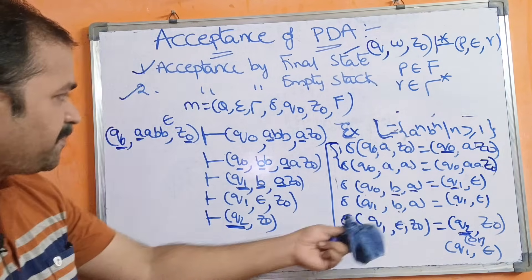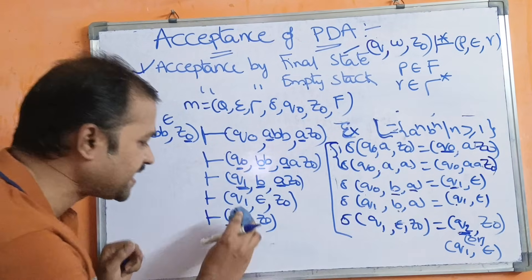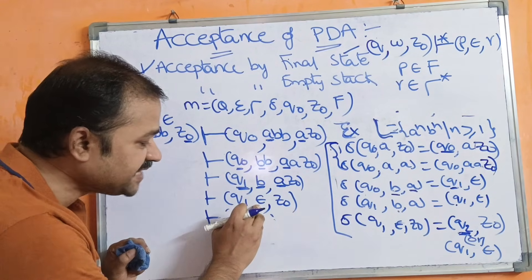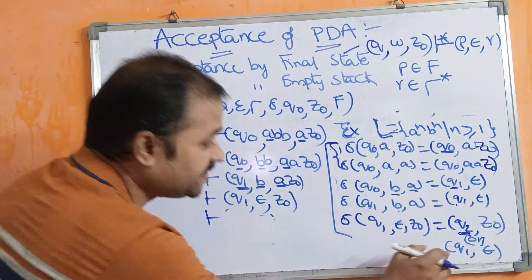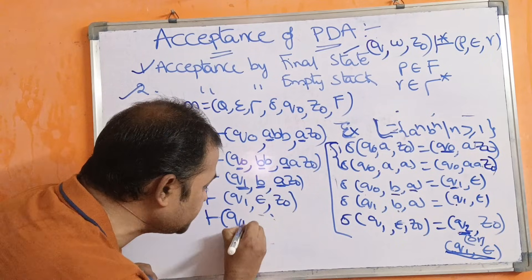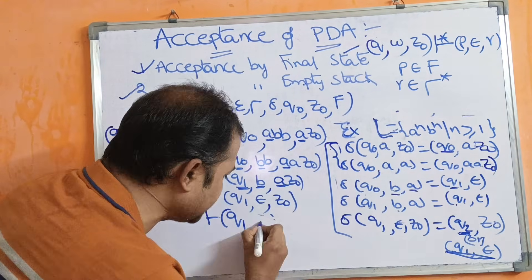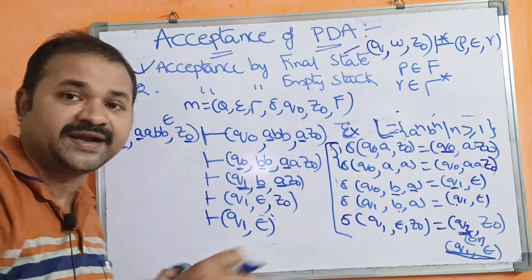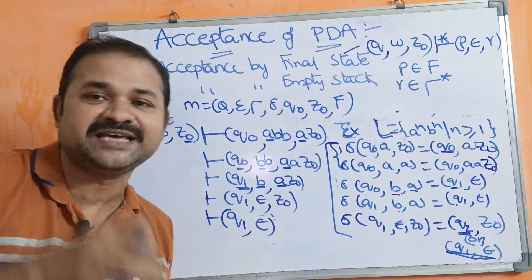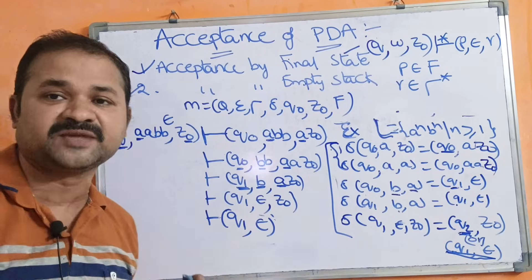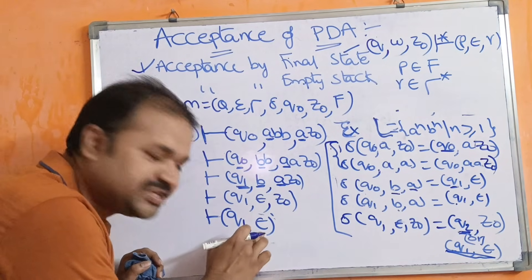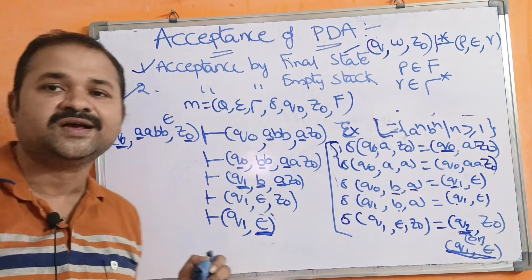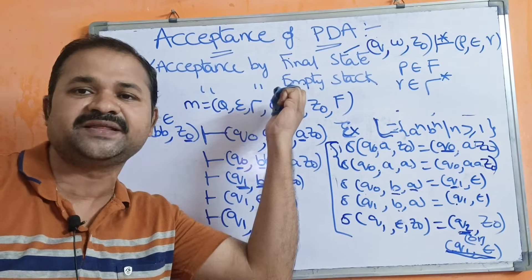Now let us see the second approach: acceptance by empty stack. We need to change only one move. If the current state is q₁, the input symbol is epsilon, and the stack's topmost symbol is Z₀, then we stay at q₁ but perform the pop operation. We pop Z₀ from the stack, leaving the stack empty — denoted by epsilon. After processing the entire input string, the stack is empty, so we can say this language is accepted by the PDA.